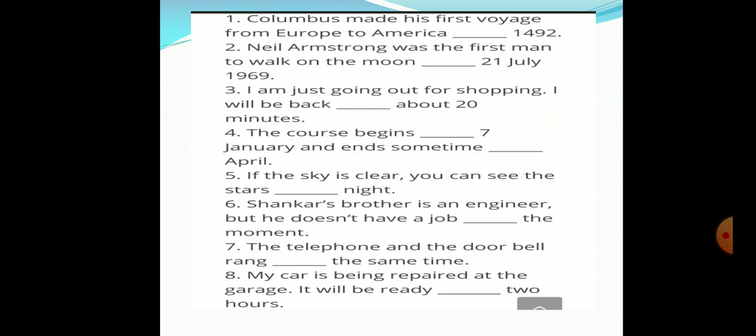In the next section, again you have eight more examples. There is a blank place in each of these sentences. Fill these examples with the prepositions of time. Columbus made his first voyage from Europe to America in 1492. Second one, Neil Armstrong was the first man to walk on the moon on. On will come in second blank place. Third one, I am just going out for shopping. I will be back in about 20 minutes.